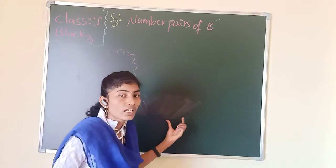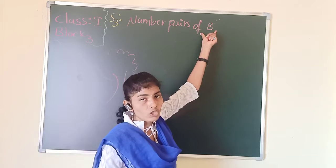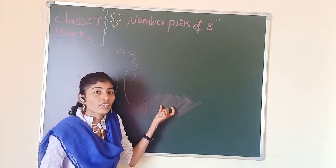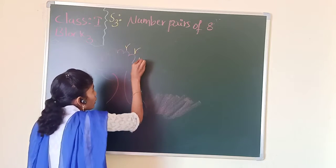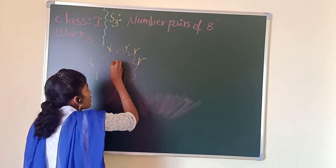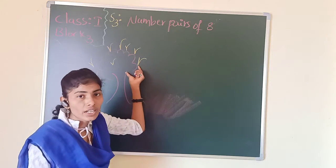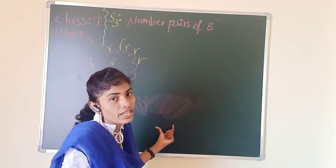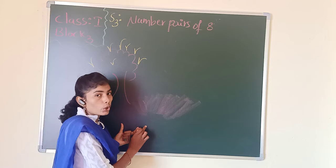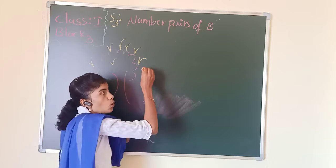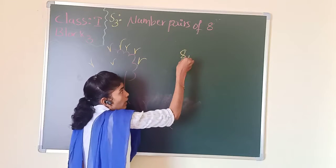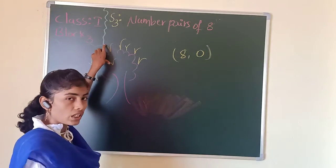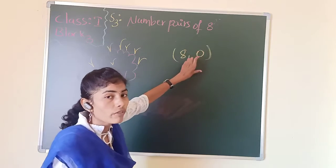There are 8 monkeys playing on the tree — let's count: 1, 2, 3, 4, 5, 6, 7, 8. How many monkeys are on the tree? 8 monkeys. How many monkeys will be on the grass? 0 monkeys — there are no monkeys on the grass. So what number pair can we write? 8, 0. There are 8 monkeys on the tree and 0 monkeys on the grass, so 8 comma 0 is our number pair for 8.